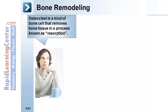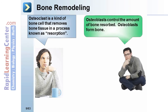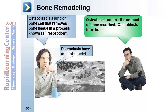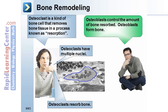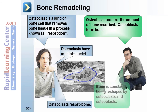An osteoclast is a kind of bone cell that removes bone tissue in a process known as resorption. Osteoblasts control the amount of bone resorbed; osteoblasts form bones. Osteoclasts have multiple nuclei and resorb bone. Bone is constantly being reshaped by osteoclasts and osteoblasts.